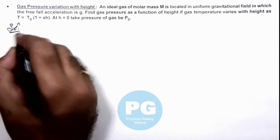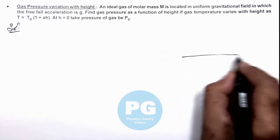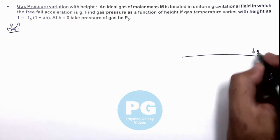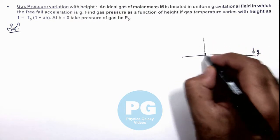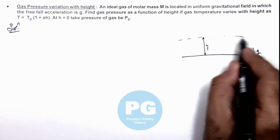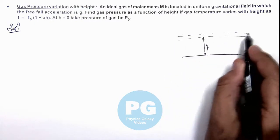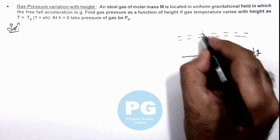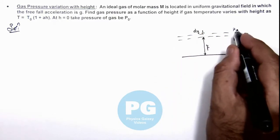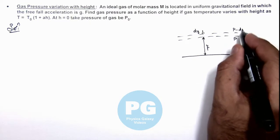So here we can see this is the surface of Earth and in this region uniform acceleration is g. Then we can consider an elemental atmospheric layer of width dy at a height y. So if pressure here is P, at this point pressure can be written as P minus dP.